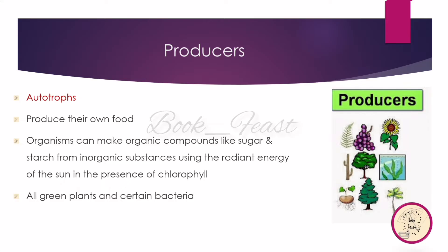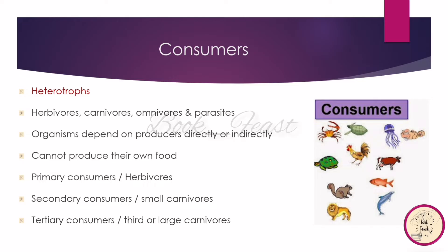Cyanobacteria are Producers, and all green plants are Producers — they use sunlight and chlorophyll to produce food. Consumers are called Heterotrophs. They depend on plants and animals for their food.